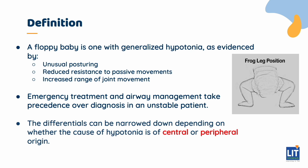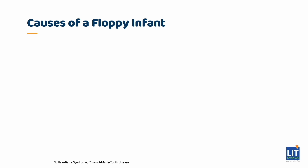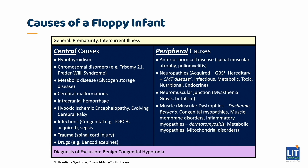Narrow down the differentials by determining if the hypotonia is of central or peripheral cause. First, rule out intercurrent illness and sepsis. A critically ill child may not have normal tone, and treating the infection should take priority. Don't forget to check for prematurity. The causes are broadly divided into central versus peripheral causes.